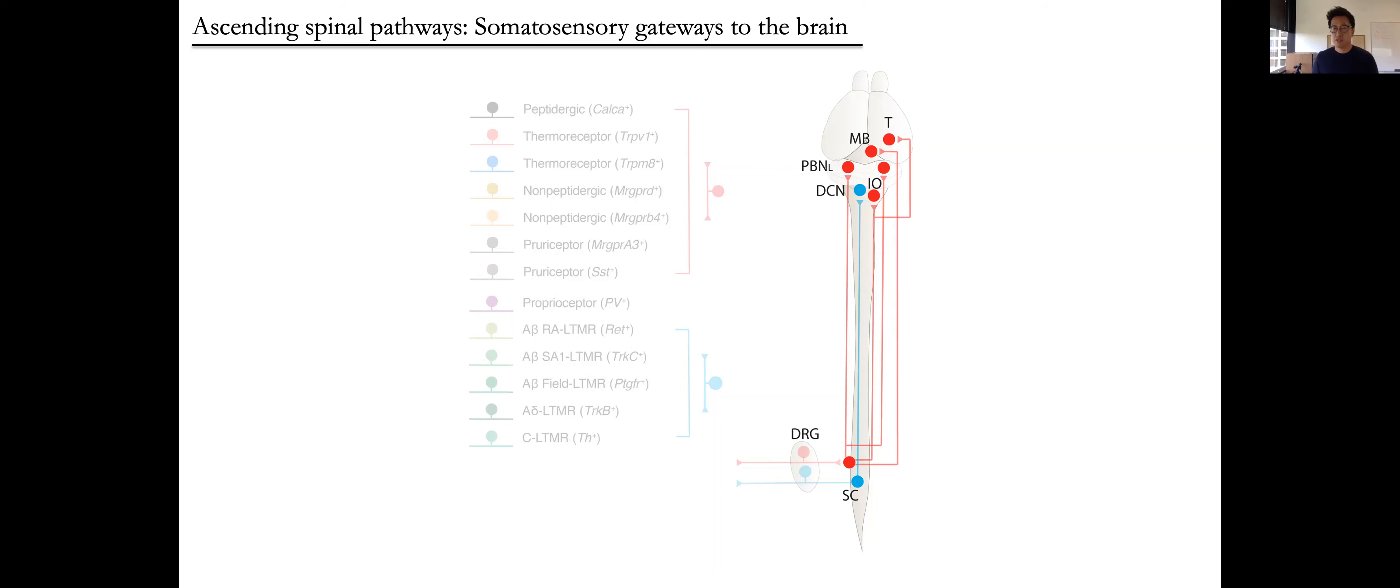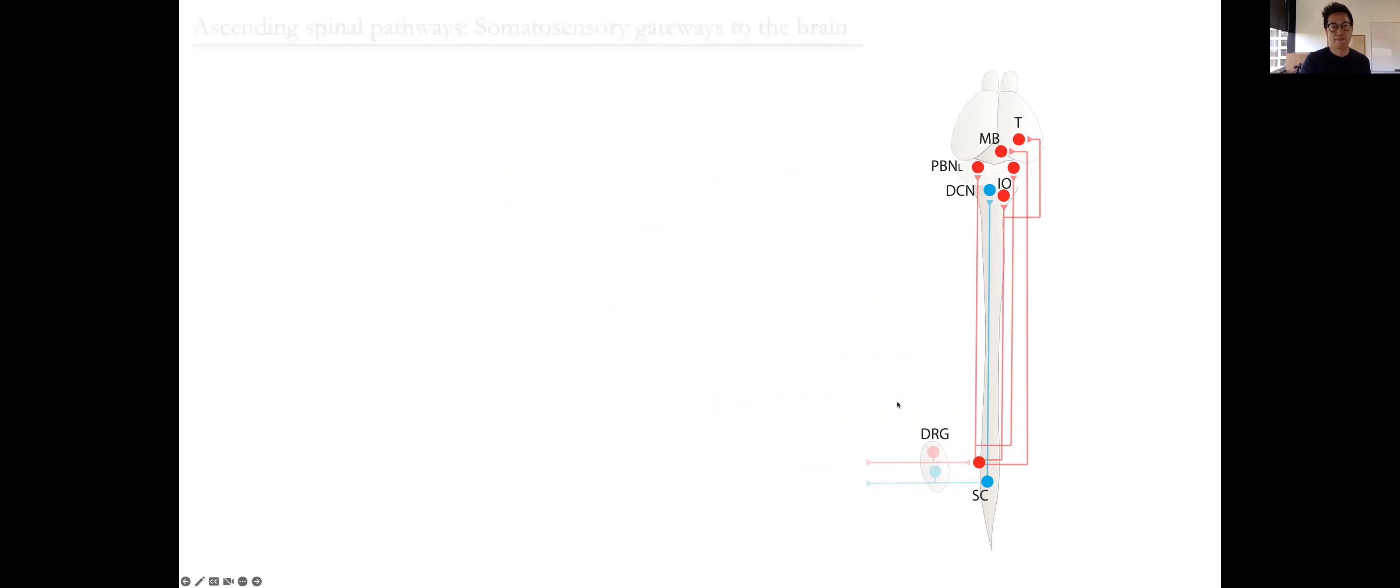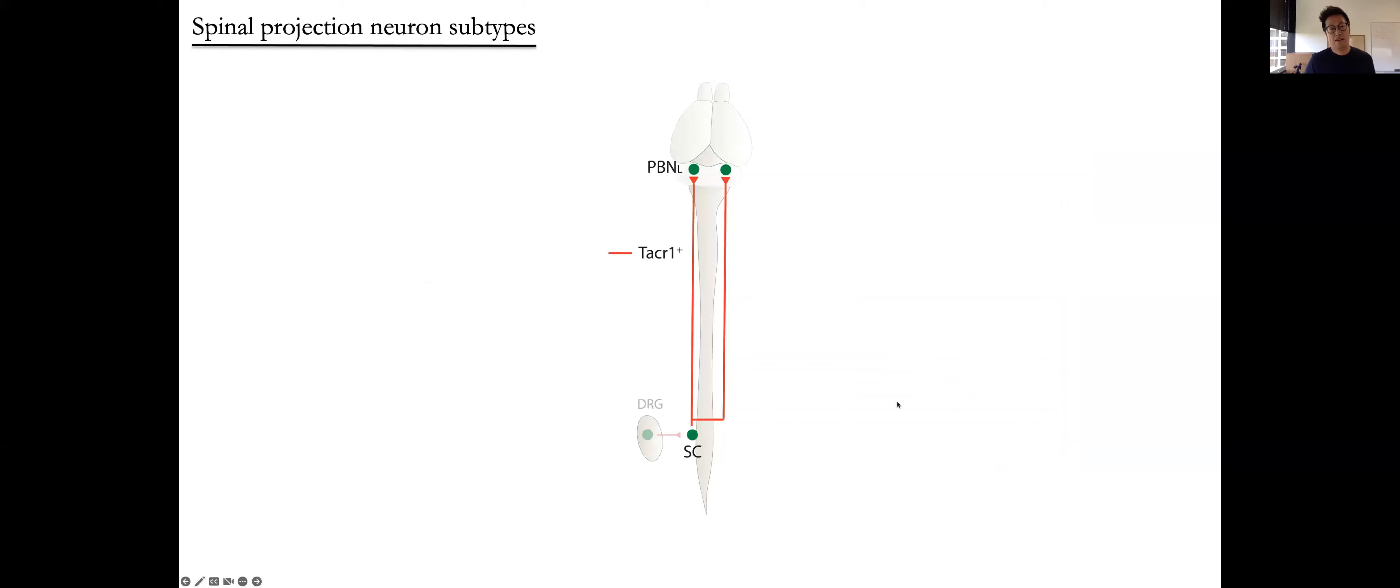The goal of my postdoc work was to determine the organizational logic of the ascending somatosensory pathways. Instead of going into the detail of the work, I'll just summarize two main findings. First, the traditional view of the ascending pain pathways emphasize the involvement of this one population, the TACR1, which is also called the substance P-receptor positive projection neurons, in transmitting all the nociceptor signals from the spinal cord to the brain.